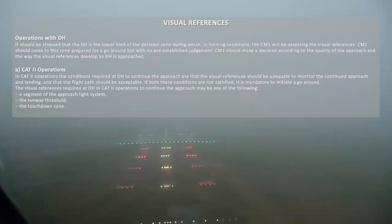In CAT 2 Operations, the conditions required at Decision Height to continue the approach are that the visual references should be adequate to monitor the continued approach and landing, and that the flight path should be acceptable. If both these conditions are not satisfied, it is mandatory to initiate a go-around.